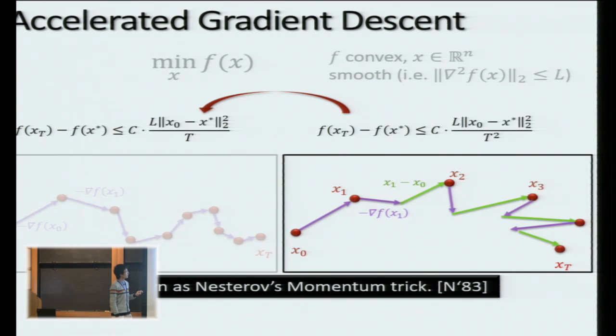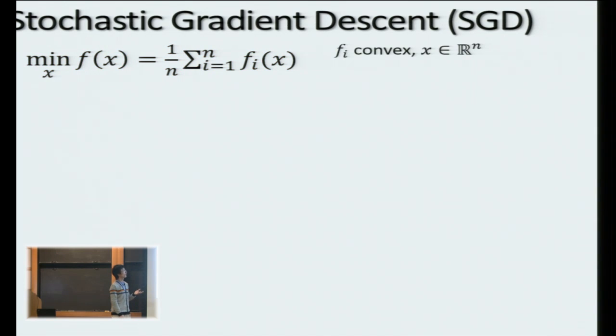So in today's talk, I want to focus on actually a more challenging case than gradient descent. That is the stochastic setting. Suppose the function f(x) this time is explicitly written as a finite average over functions fi, each one being also, say, convex and smooth for simplicity.